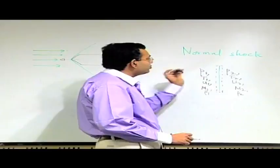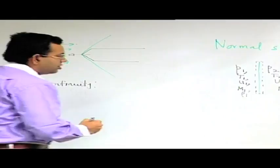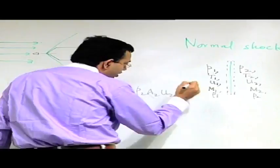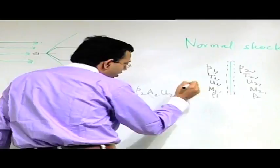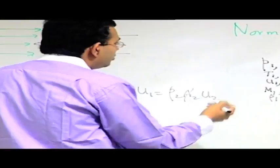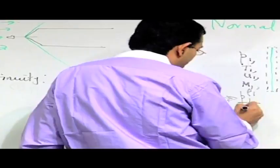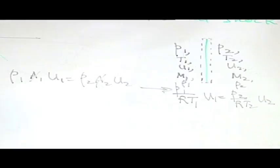We now apply the basic equations, which are still valid. For the continuity equation in one-dimensional flow, if A is the area of the shock front, then ρ1·A·U1 = ρ2·A·U2. Since A1 and A2 are the same, we can use the equation of state to write (P1/RT1)·U1 = (P2/RT2)·U2.